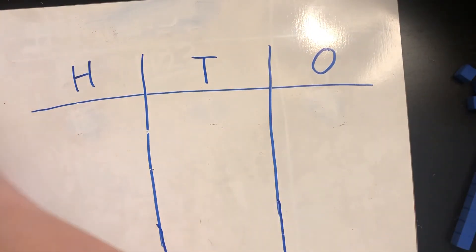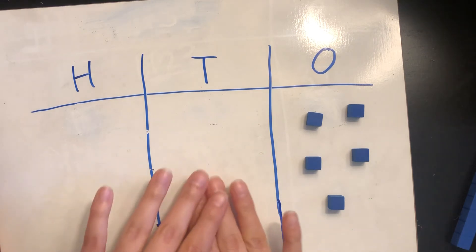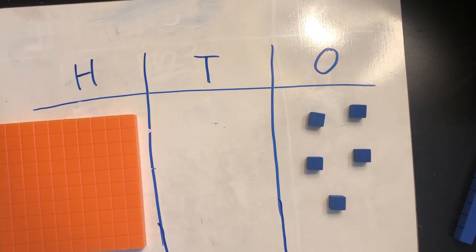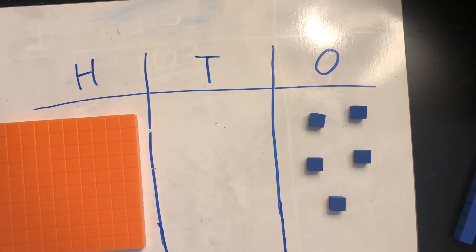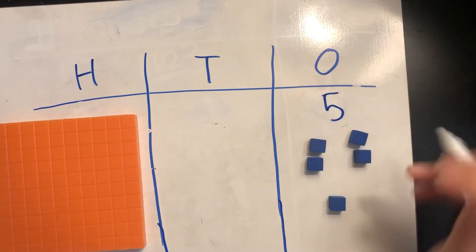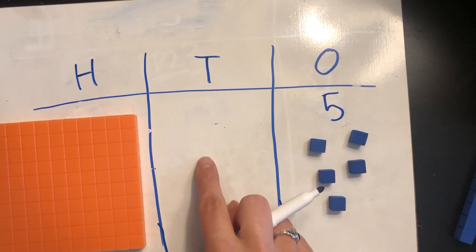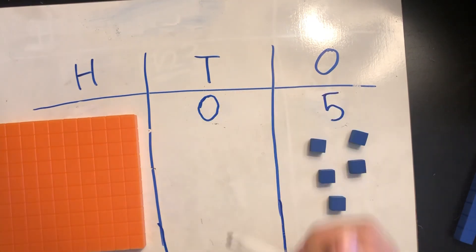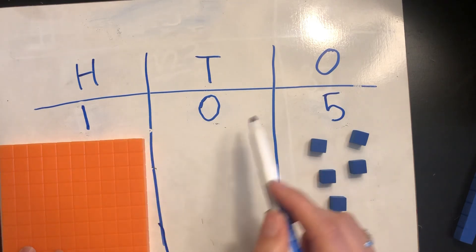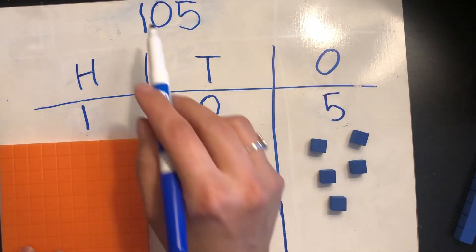Let's try another one. This time I'm going to put five ones. I'm not going to put any ten sticks, but I'm going to put a hundreds flat. What number did I build? I put one, two, three, four, five ones. I didn't put any tens, so I put a zero there. I put one hundreds flat down. So I had one hundred, zero tens, and five ones — I built the number one hundred five.